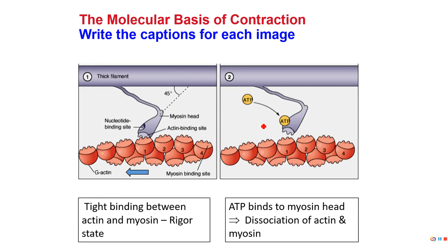When someone dies, there's still ATP available, so cross-bridge cycling will continue, but eventually we run out of ATP — and then actin and myosin are tightly bound together. To summarize: ATP binds to myosin, and that causes actin and myosin to separate.